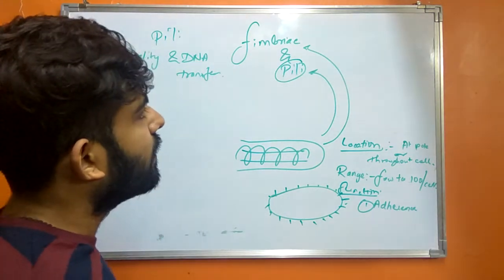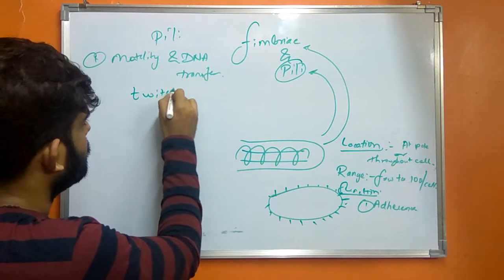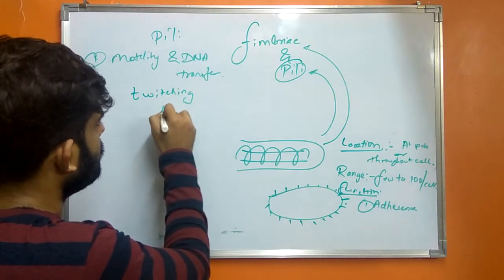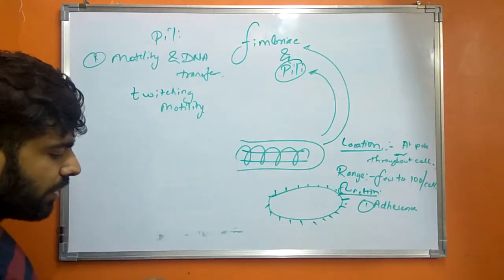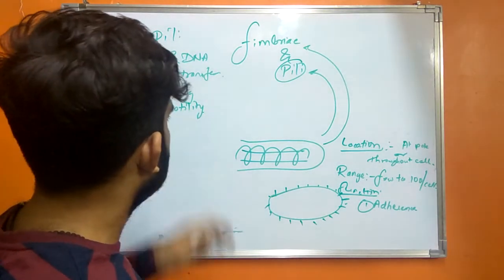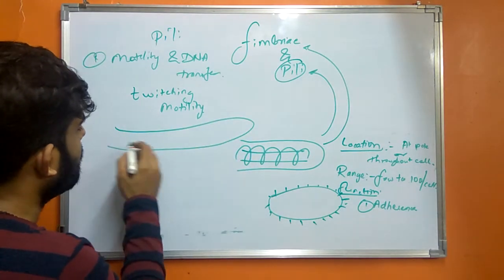Motility by Pilli includes first twitching type of motility. Twitching motility includes the extension or the additional assembly of the pilin protein.